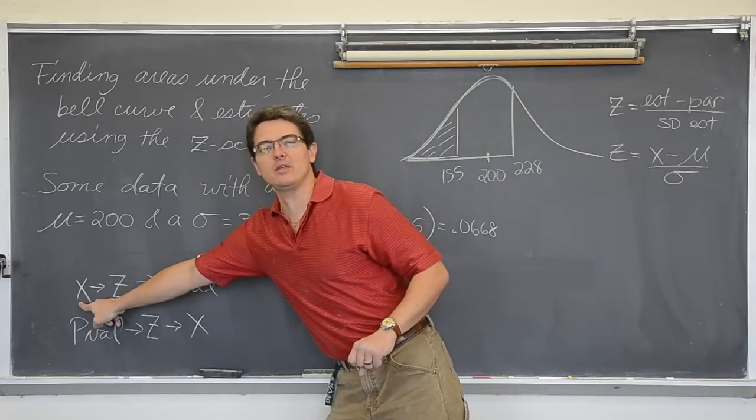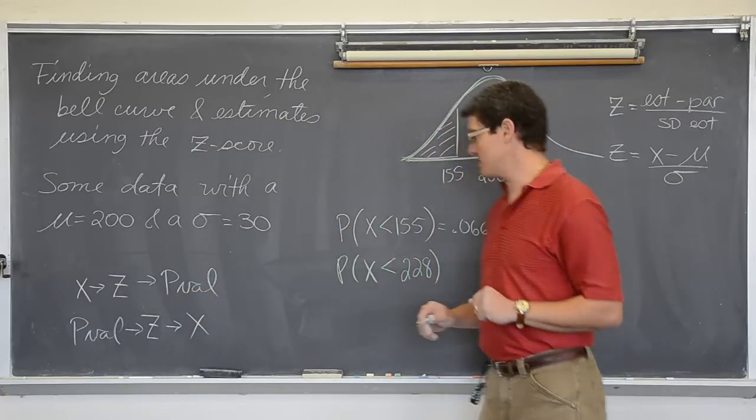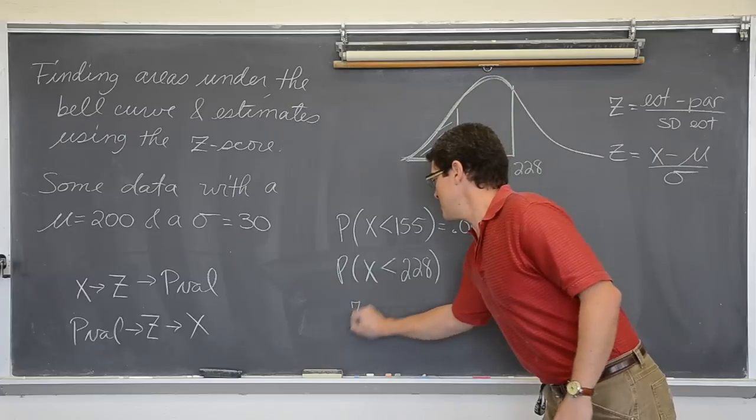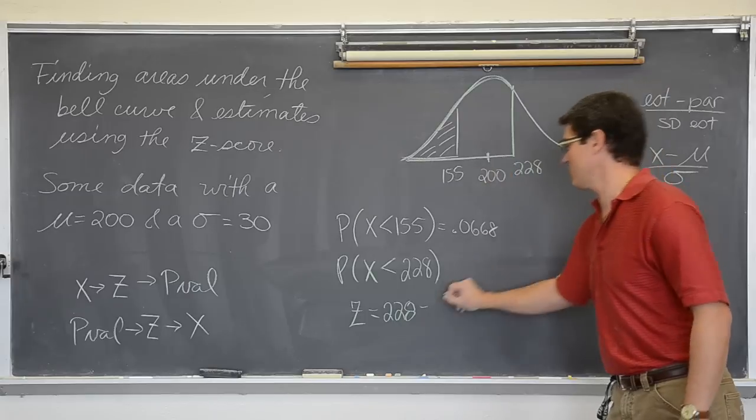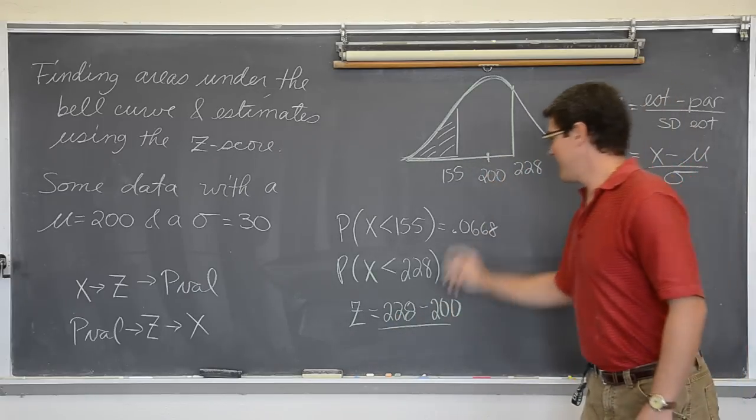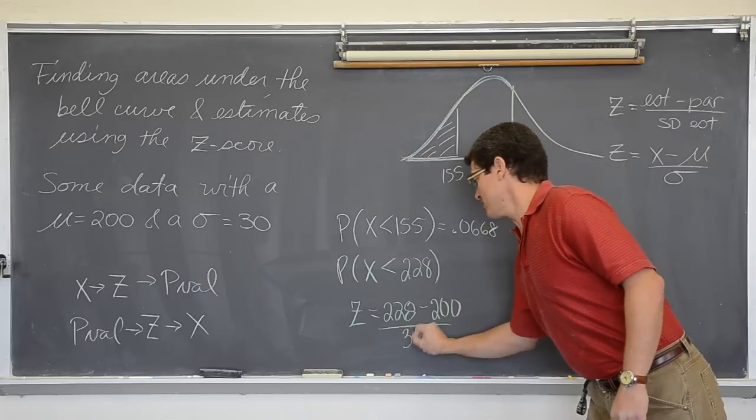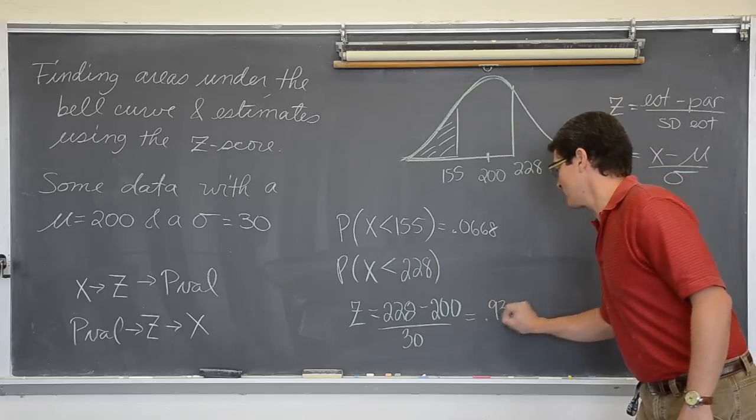Notice these patterns. I am giving you the x's, we calculate the z, and we do the p value. We are going to do the reverse in a minute. So, z equals 228, the question, minus the parameter, which is 200, divided by the standard deviation of 30, and that gives me a z score of 0.93.